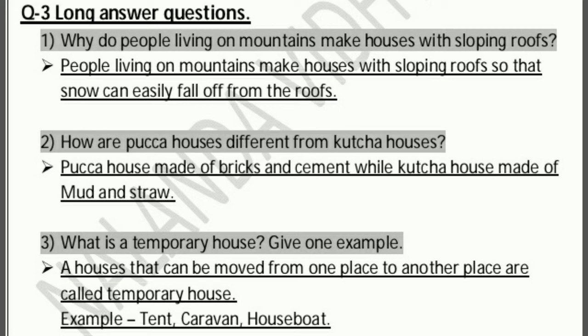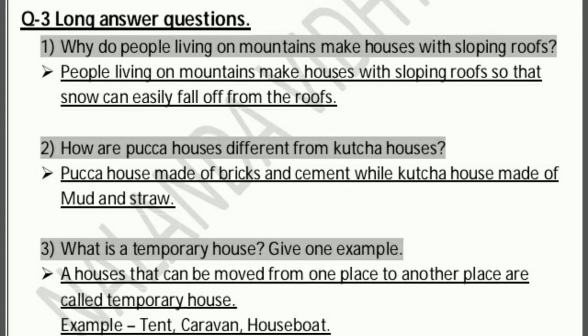Third long answer: what is a temporary house? Give one example. Answer: a house that can be moved from one place to another is called a temporary house. For example — tent, caravan, house boat — ये तीनों temporary house के examples हैं, उसमें से कोई भी एक लिख सकते हो.